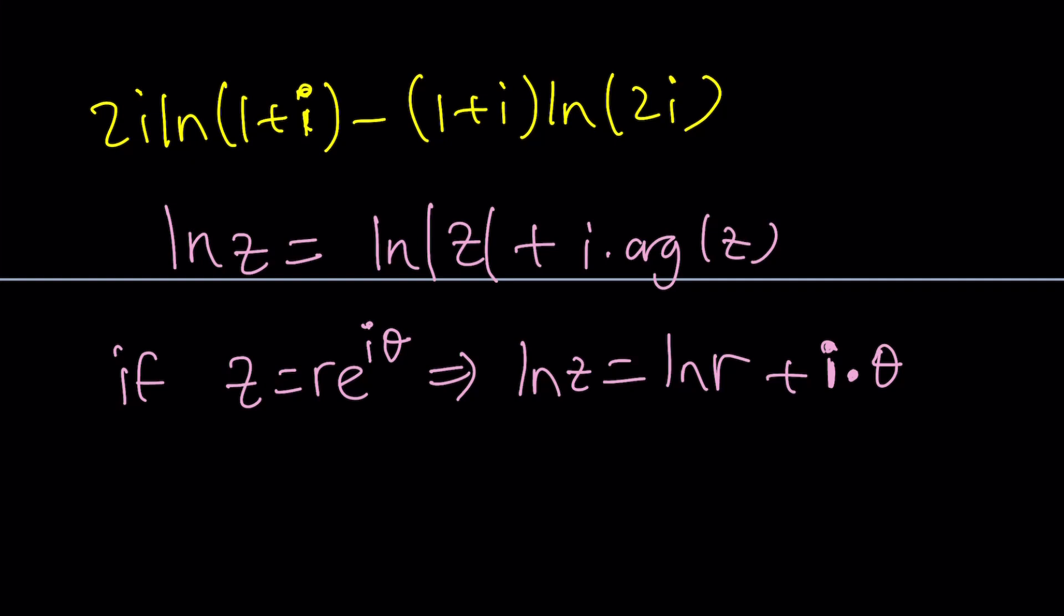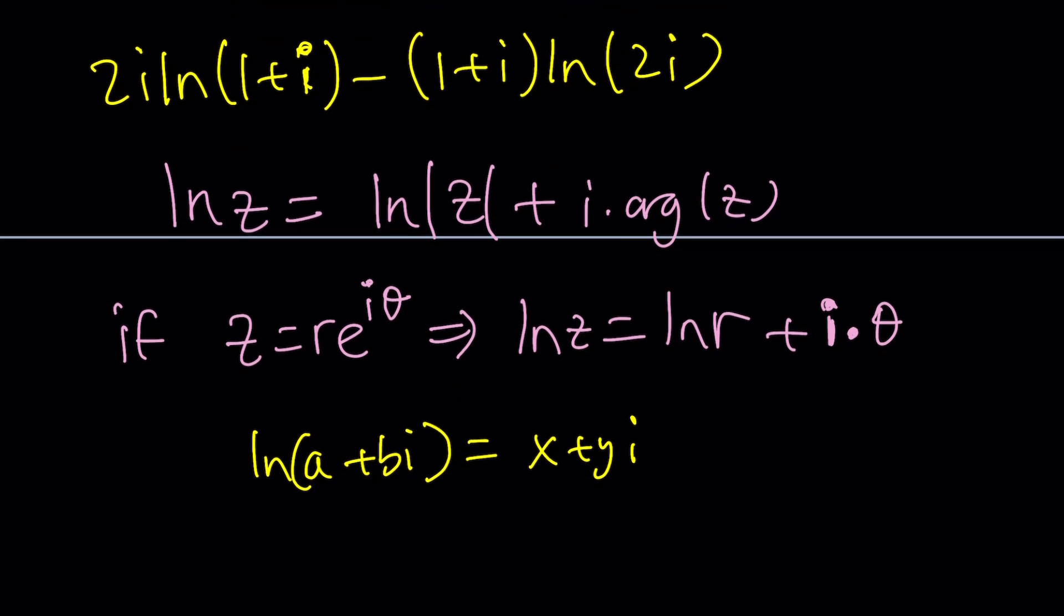because we can definitely add multiples of 2 pi to theta to get different angles. But let's just focus on this now. So notice that ln r is a real valued log, but ln z isn't. That's why we have this additional i theta, which is the imaginary part. So ln of a complex number is just another complex number. Try to keep it simple, and look at the big picture.